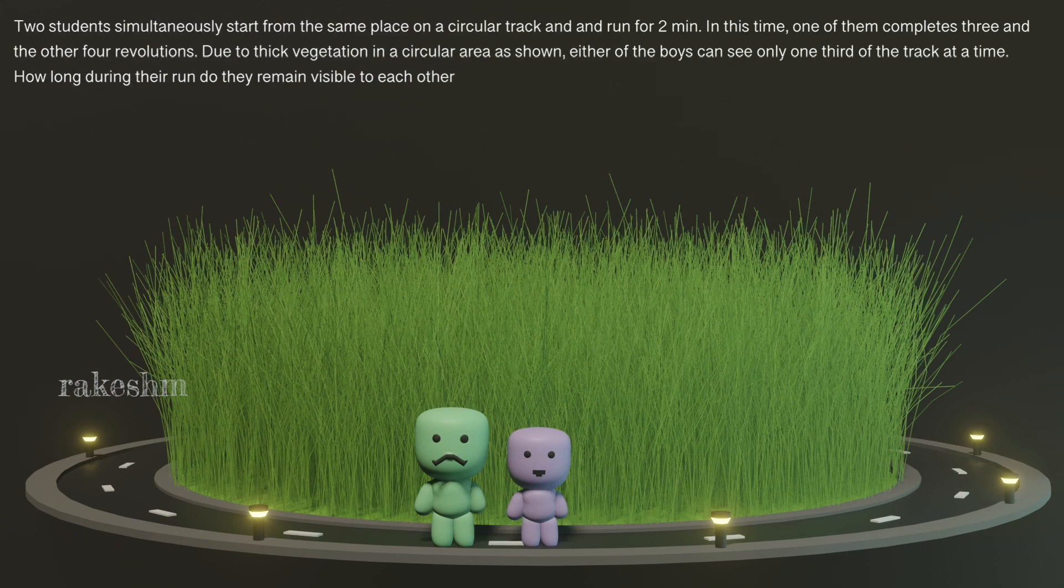Good morning dear students, I hope you all are doing good. I am Dimitri, a photographer from Russia. I was traveling in the sky and you don't believe what I saw - I saw baby Hitler and baby Stalin at an undisclosed location. I took a photo of them. Let us see what they are up to. Two students simultaneously start from the same place on a circular track and run for two minutes, where these two students are Stalin and Hitler. You see Hitler with a very small mustache and Stalin with an imposing mustache.